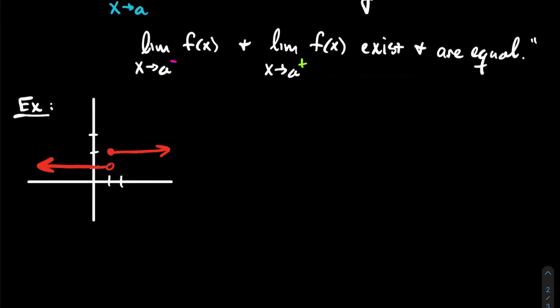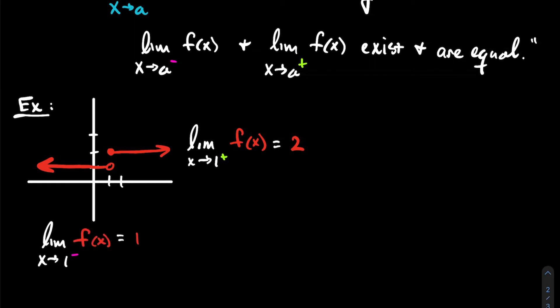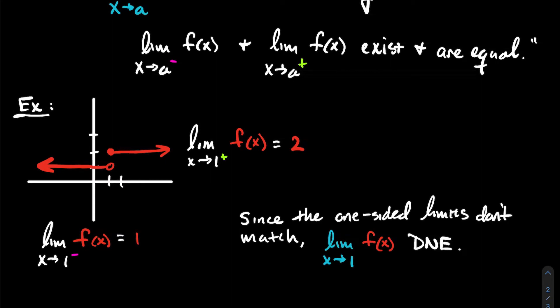Let me give you an example that demonstrates this. I've got this step function here in red. If I think about what's going on as my inputs approach one from the right, all the y values are two, so the limit as x approaches one from the right is two. Whereas if I look at the limit as x approaches one from the left, I see all those y values are one. The one-sided limits do not match — from the left you get one, from the right you get two — therefore the limit as x approaches one does not exist.